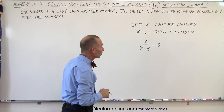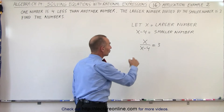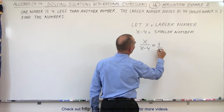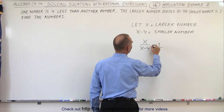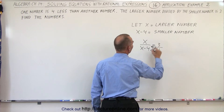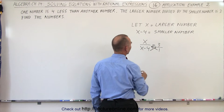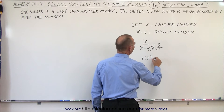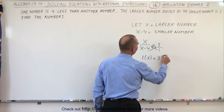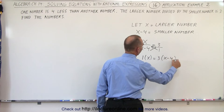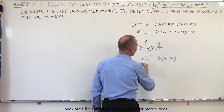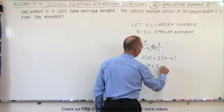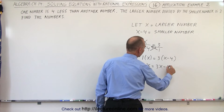Well, what we can do here is cross-multiply. This is like 3 over 1. So we're going to multiply the x times the 1 and the x minus 4 times the 3, which gives us 1 times x is equal to 3 times x minus 4. And if we multiply this out, we get x is equal to 3x minus 12.